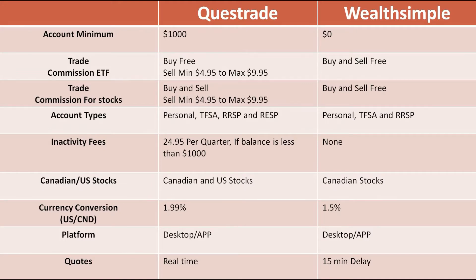Wealthsimple also has those three account types available. But if you look at Questrade, they have more options: you can trade under an RESP account, buy bonds, GICs, and other options. If you want to trade in precious metals, you can do that under Questrade, whereas on Wealthsimple that is not available for now.